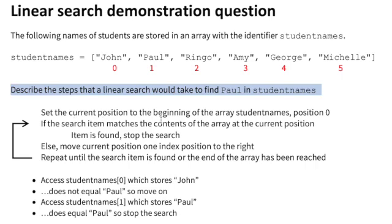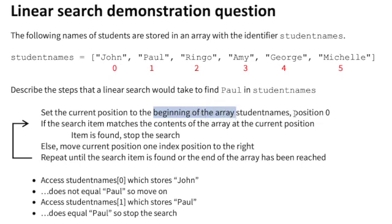The first thing we must state is we start at the beginning of the array, which is position 0. If the search item we are looking for is a match, we act on that. In this case we're looking for Paul, and position 0 stores John, so this is not a match.